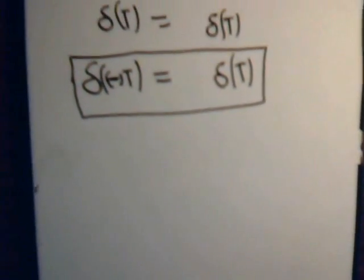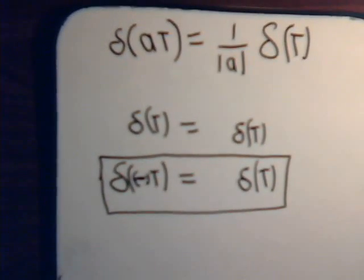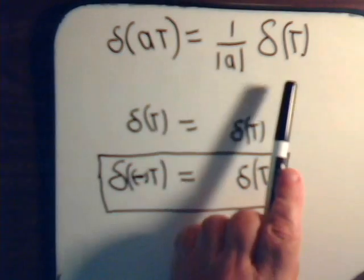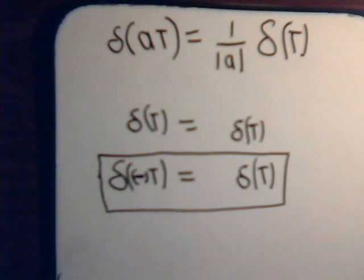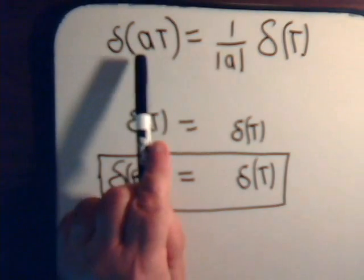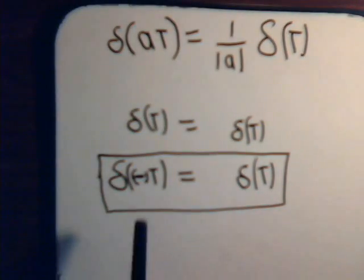But the way to show that formally, of course, is to remember what we did in the previous video, considering the scaling property of the Dirac Delta function. But once we do that, having a either be plus 1 or minus 1, then of course, it just falls right out. And it's really obvious that, yes, indeed, the Dirac Delta function itself is an even function.